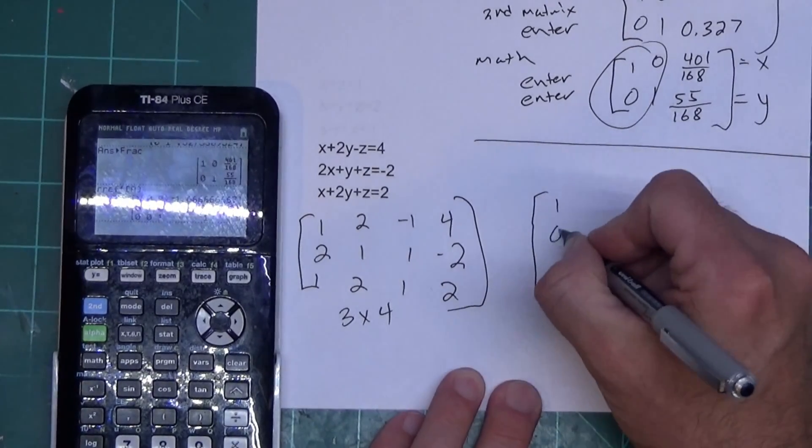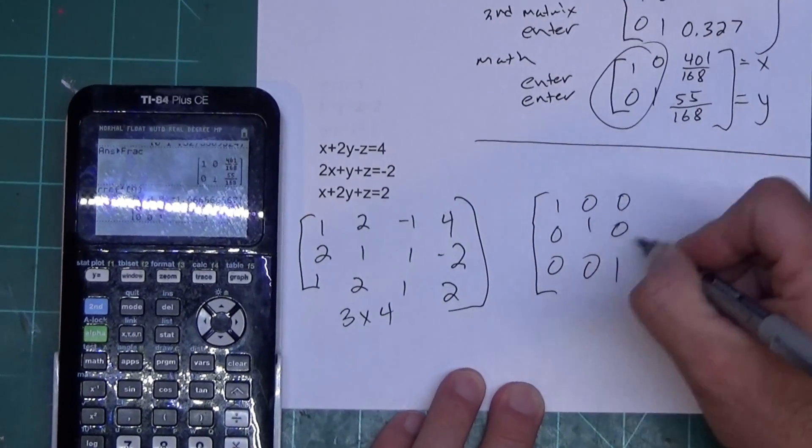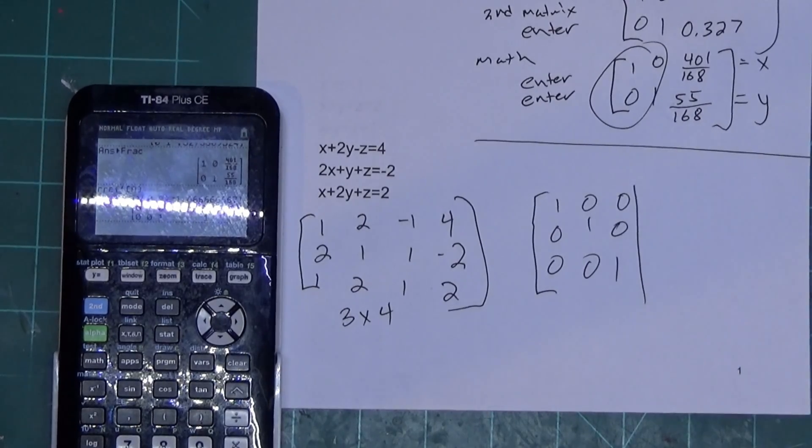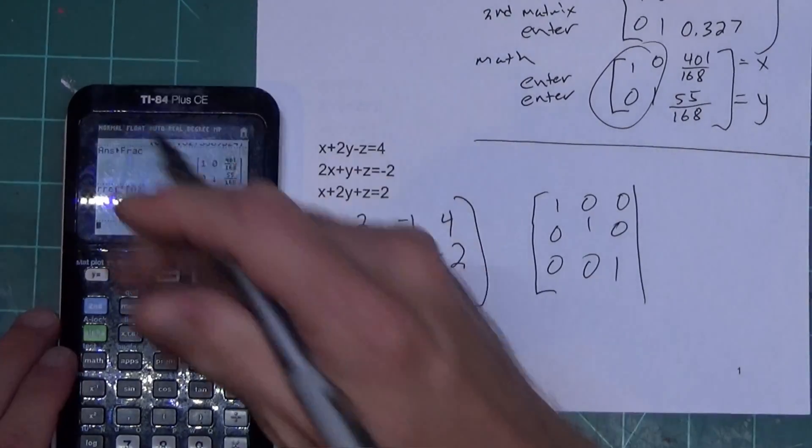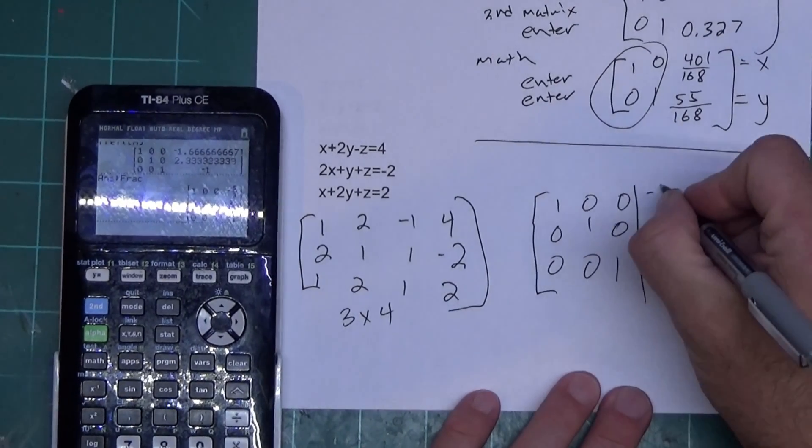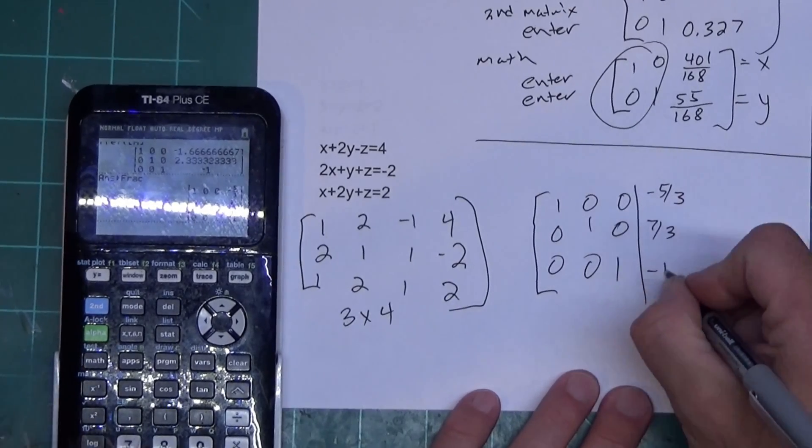And this one's giving you that same matrix on the left with the 1 down the diagonal and everything else 0s. That means it's giving me one answer. And then what I can do, because I don't want the decimals, I can hit math, enter, enter again. And it tells me negative 5 thirds, 7 thirds, and negative 1.